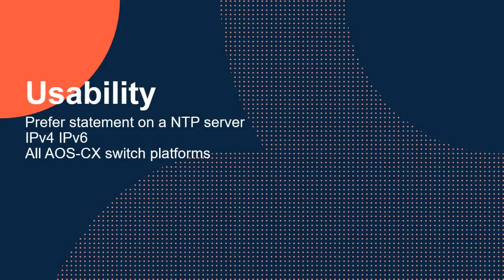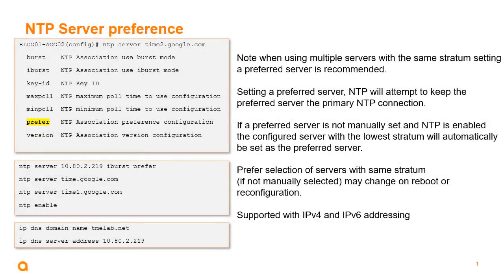The first feature is the prefer statement on NTP server for IPv4 and IPv6 protocols, relevant to all AOS CX switch platforms. We now have the option of using a prefer statement on the NTP server. In the configuration — you can see the CLI snippet on screen — the NTP server and server ID are shown. Underneath the options, along with burst, iburst, max-poll, and min-poll, we now have a prefer option, so we can select a preferred server.